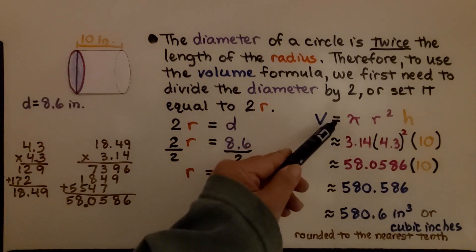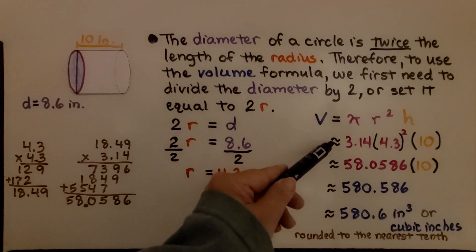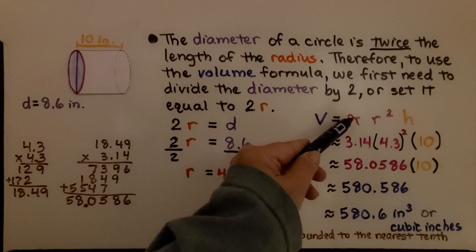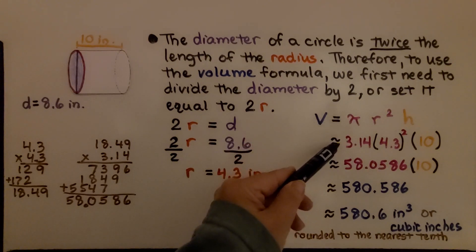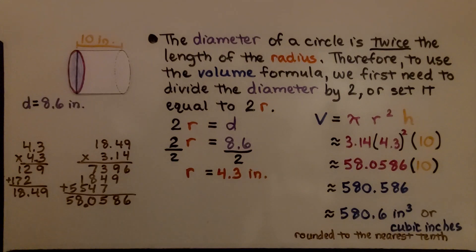Now again, notice in the formula we have an equal sign and then it moves to an approximation symbol because this pi symbol represents all the digits of pi so it is equal. This is not equal because we are only using 3.14.